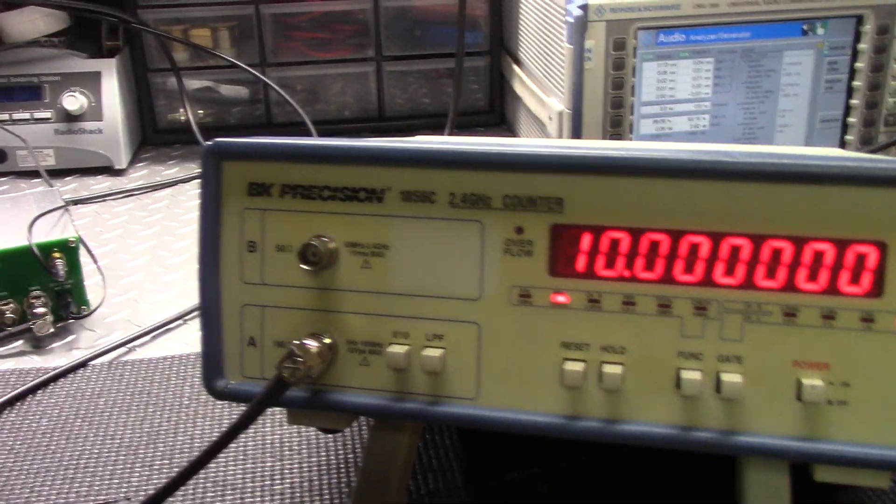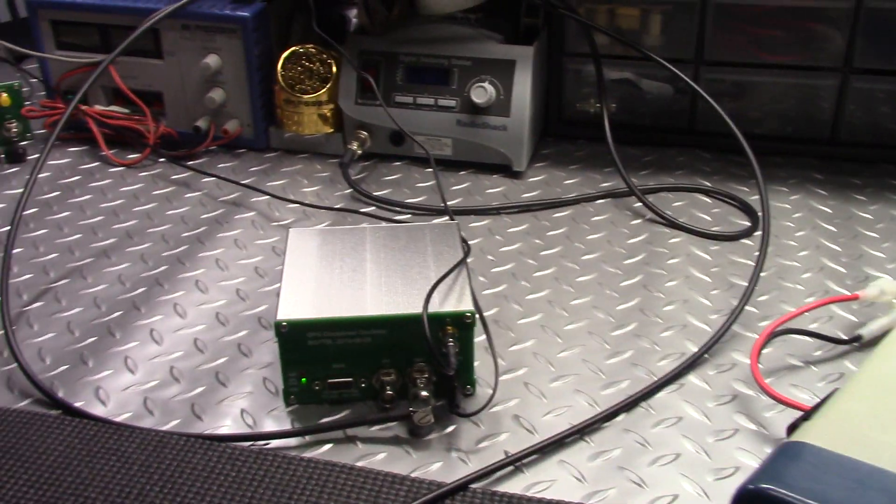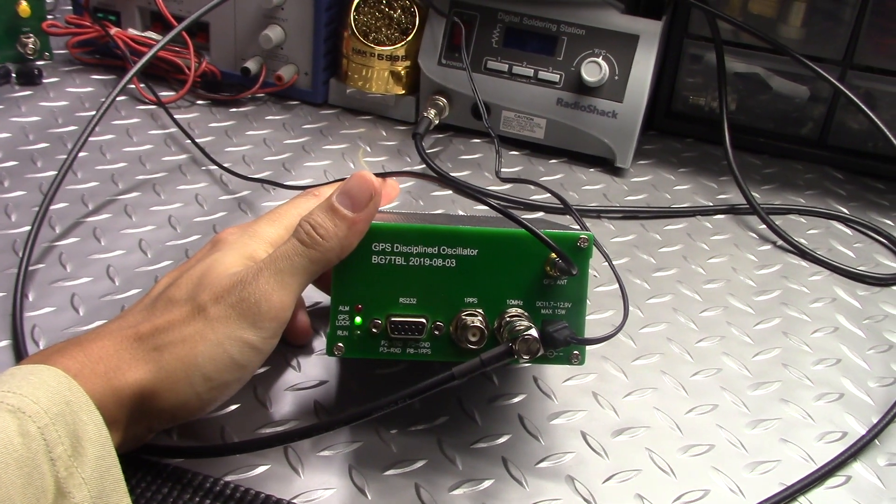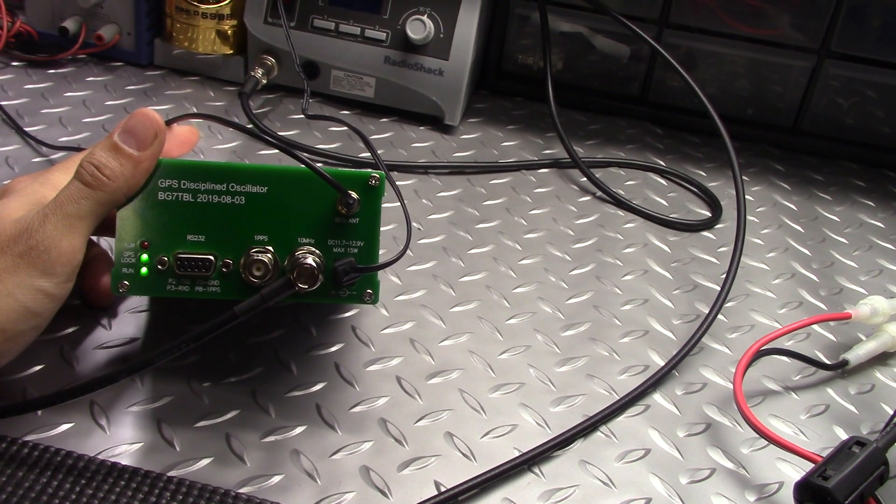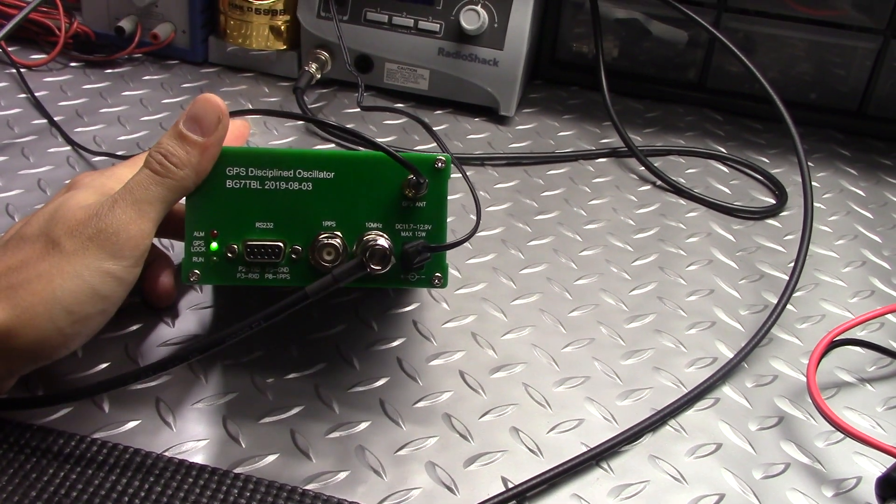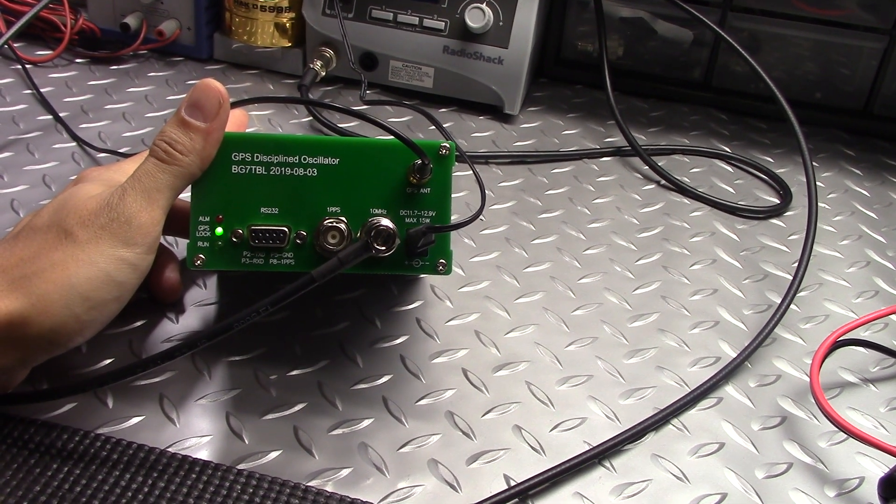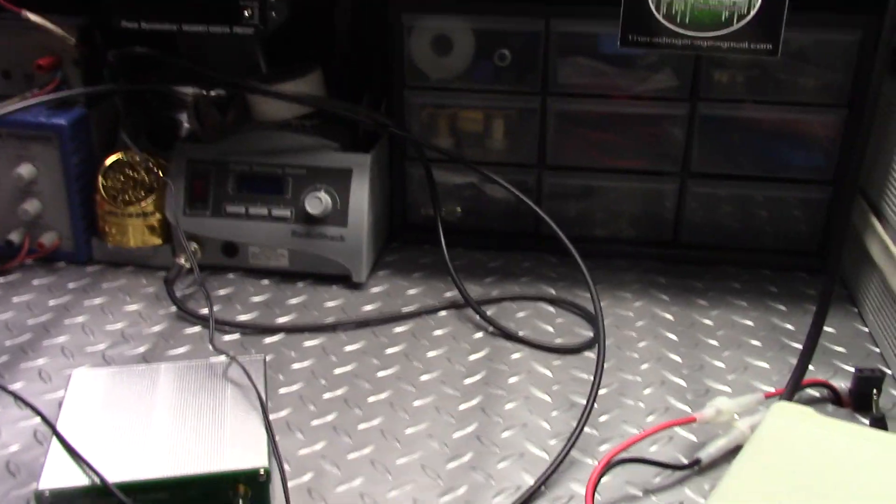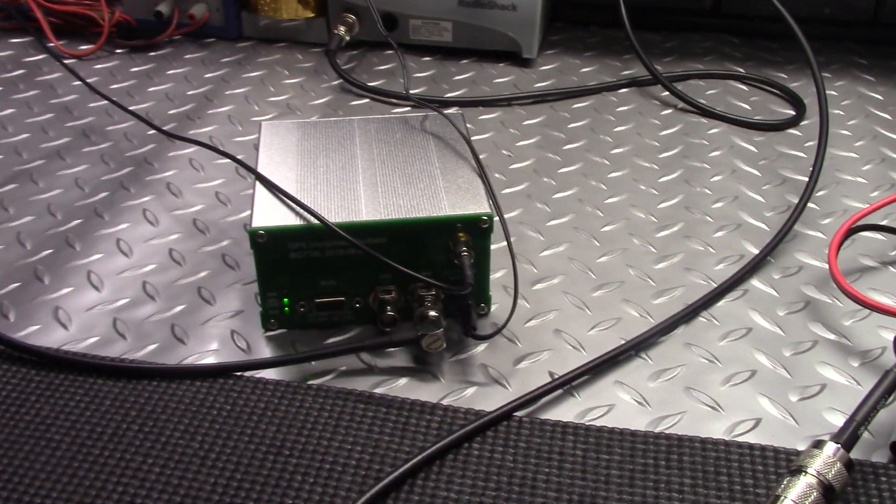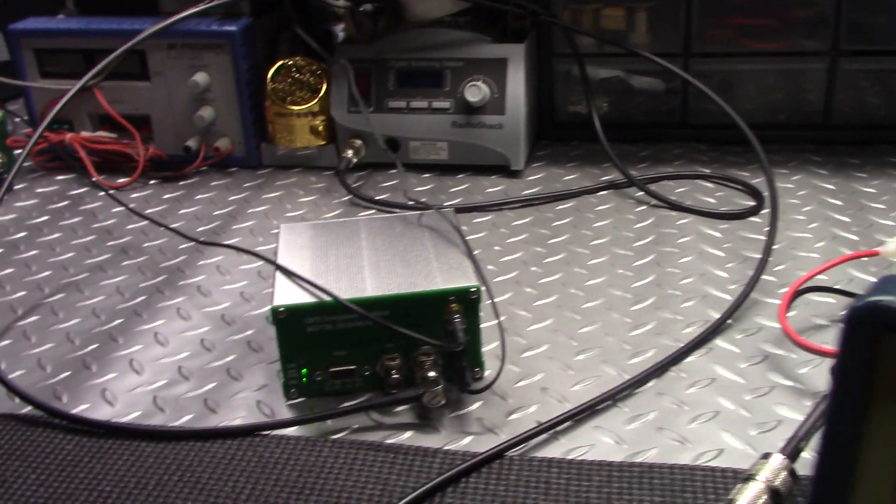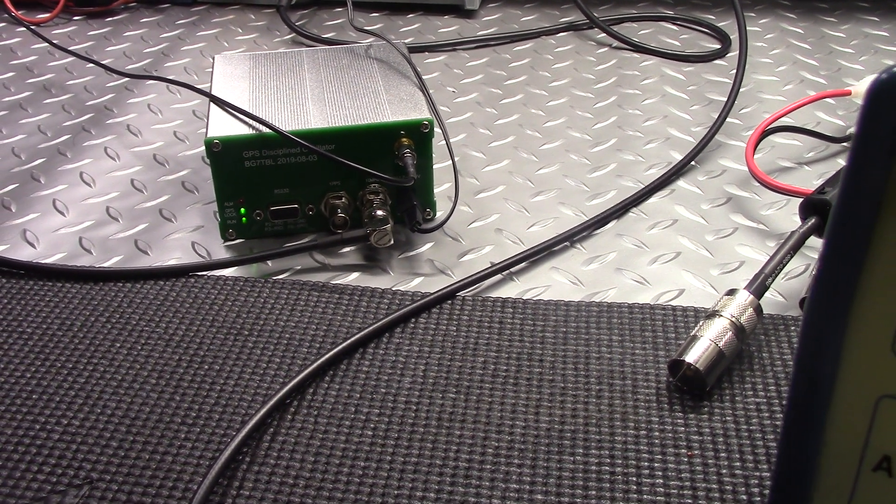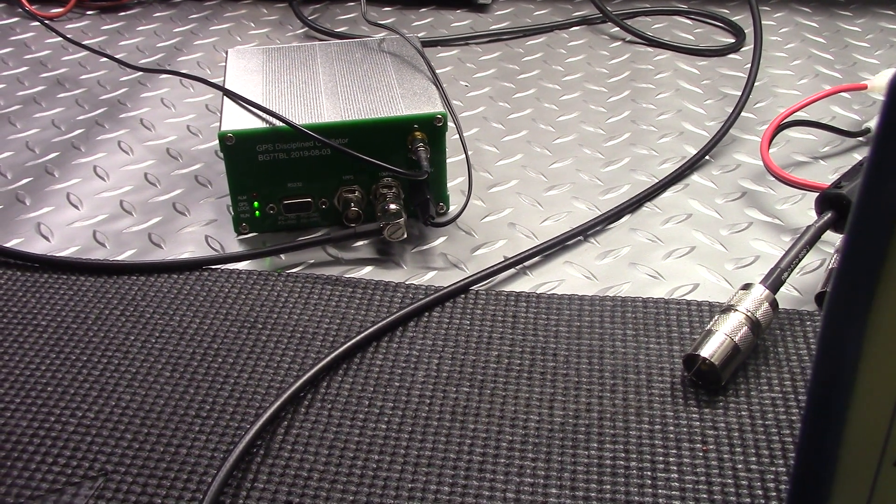On the bench today we got a GPS disciplined oscillator. This is the BG7 TBL unit. You get these off eBay, they run about 110 to 125 dollars, somewhere around there. They get shipped straight from China, and it took me about three weeks to a month to get the unit once I ordered it.